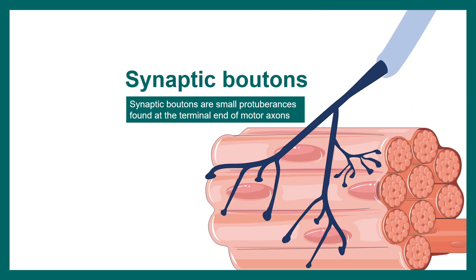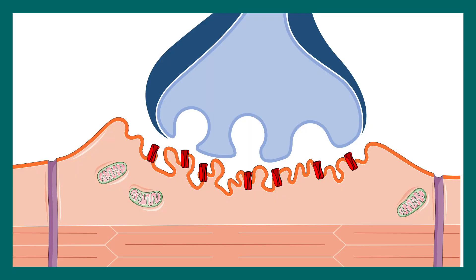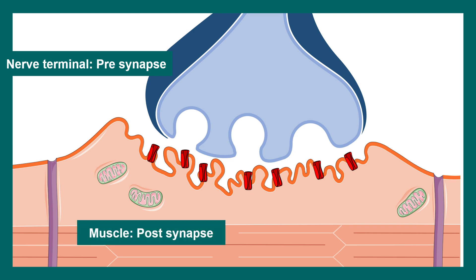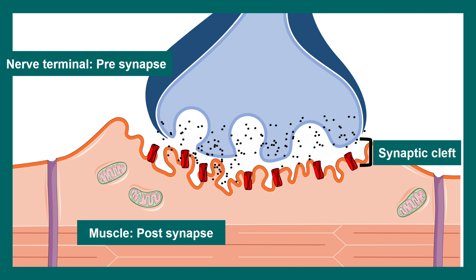The end part of the motor neurons are known as boutons, which basically innervate the muscle. In this diagram the blue is the presynaptic part or the nerve terminal, and the orange is the muscle which is the post-synapse. The junction between them is marked by the synaptic cleft where neurotransmitters are released. In the mammalian or vertebrate neuromuscular junction the key neurotransmitter is acetylcholine, so these are cholinergic synapses.